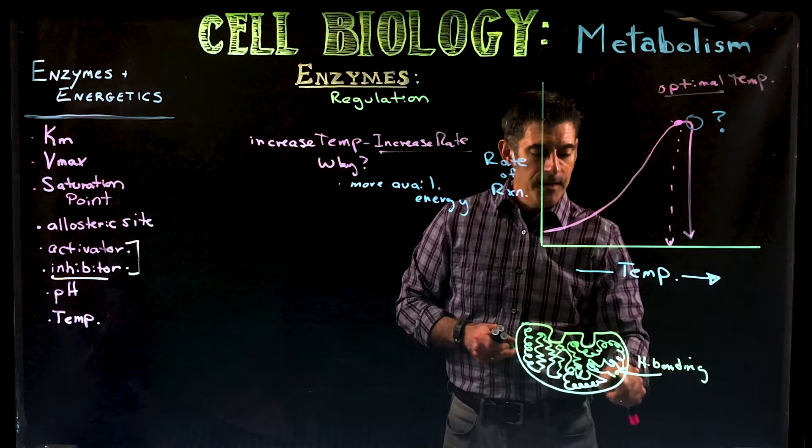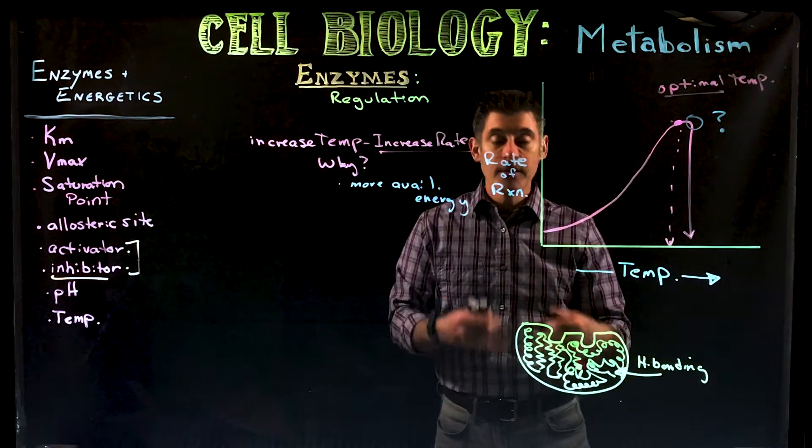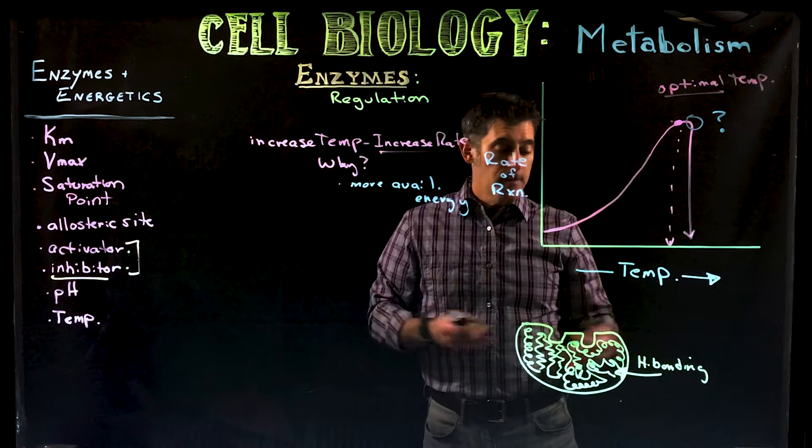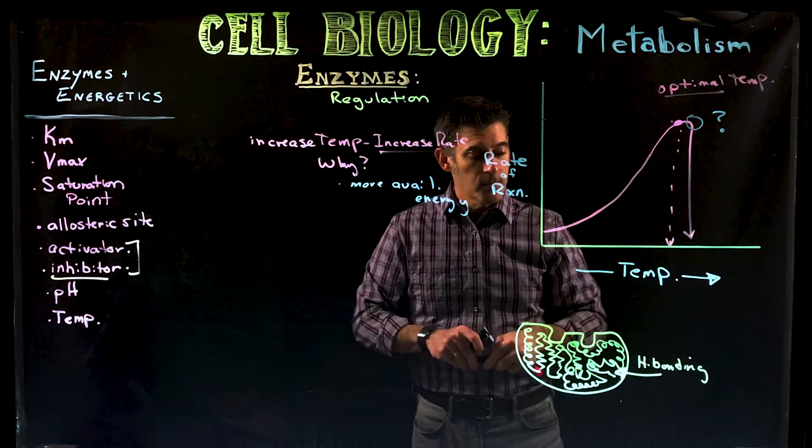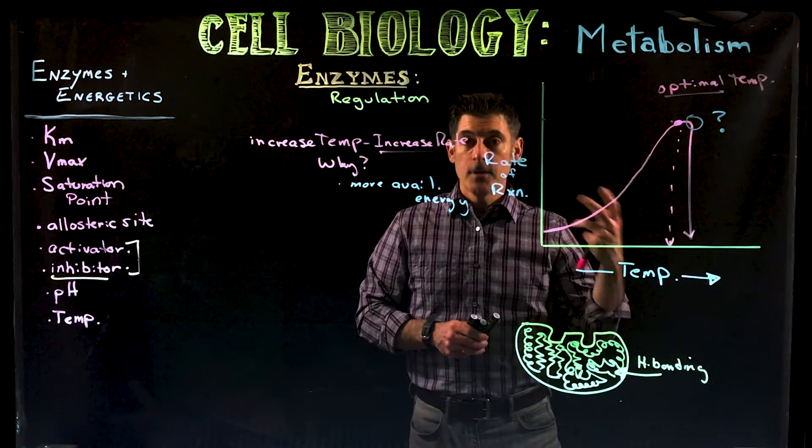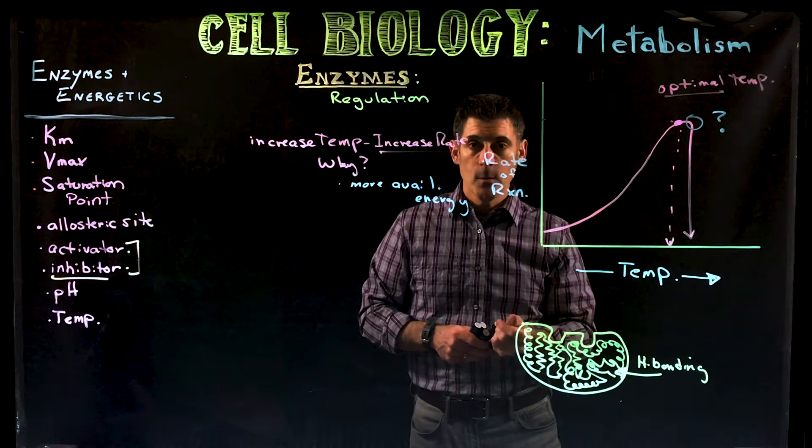The hydrogen bonding within the enzyme itself gives it its shape and structure. There's ionic bonds too, and then there's going to be some covalent bonds as well. So you think back of tertiary structure of a protein, that's what we're talking about here.